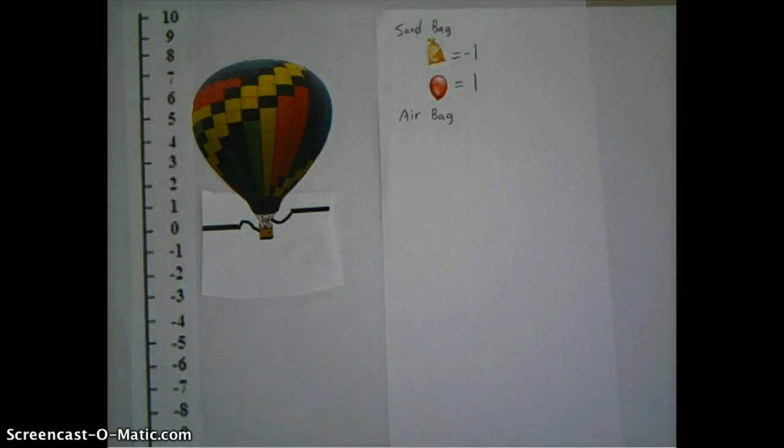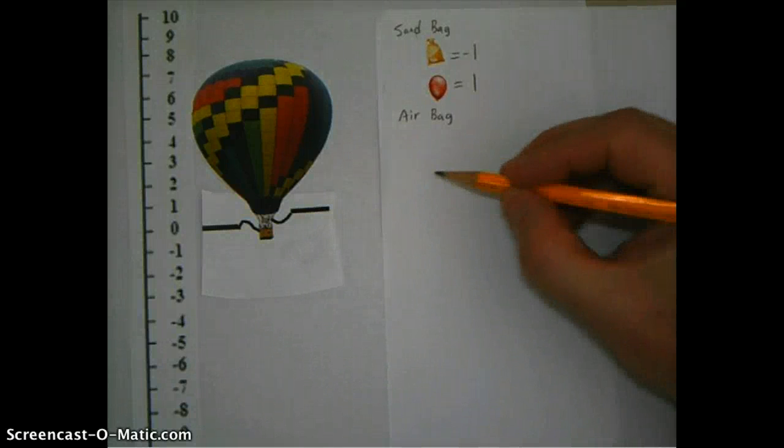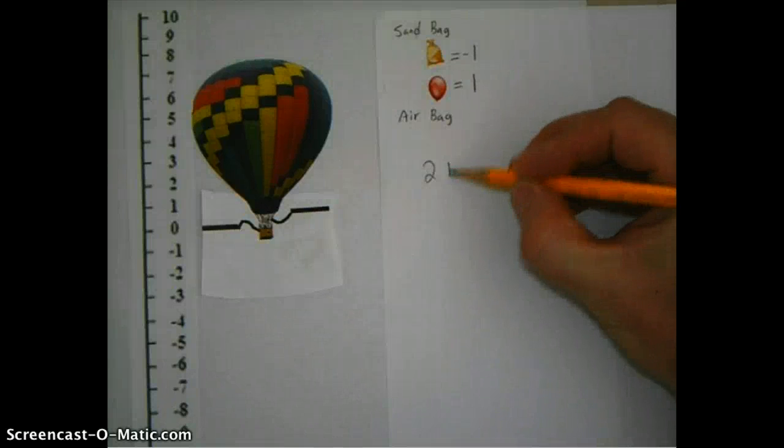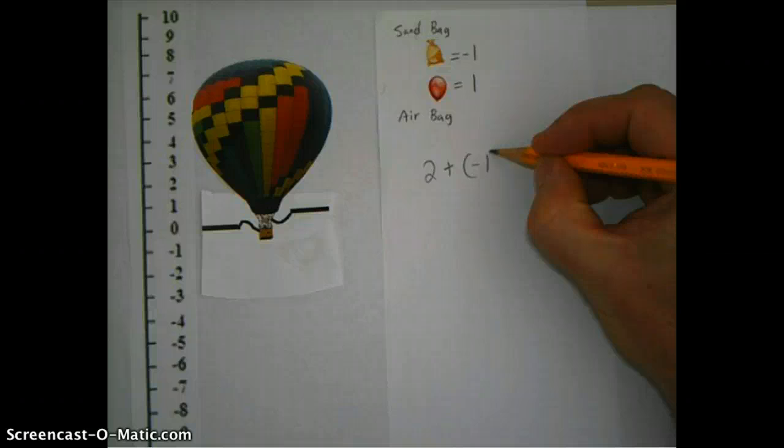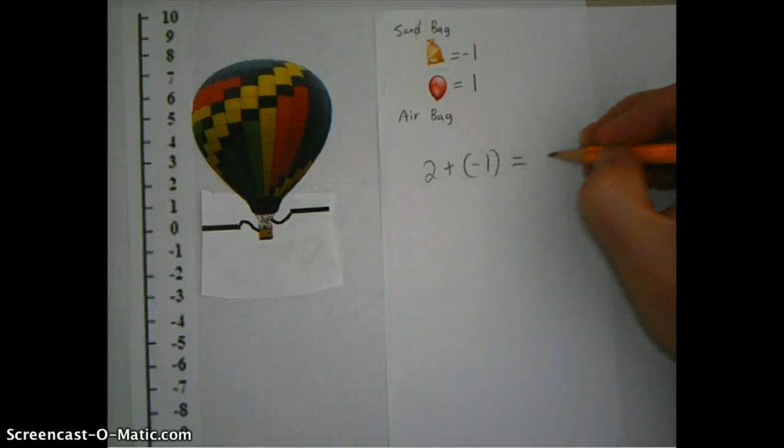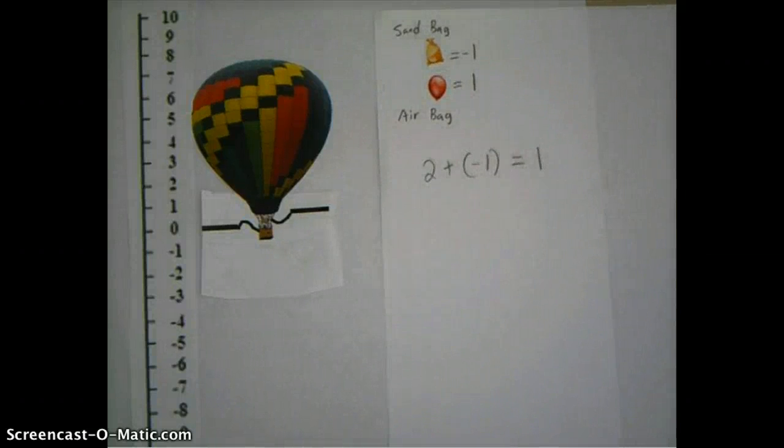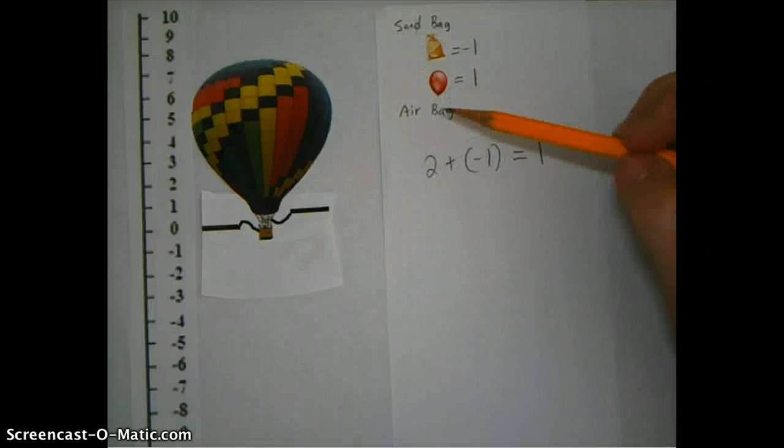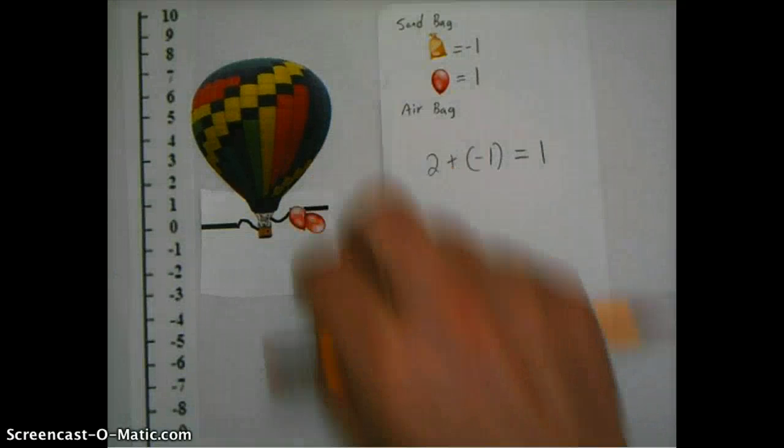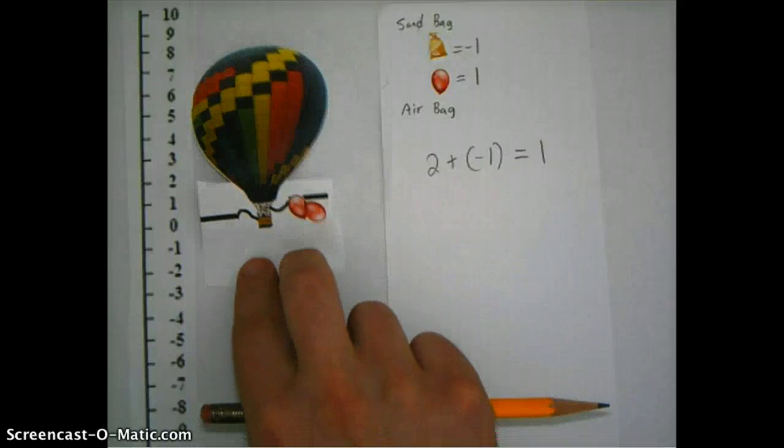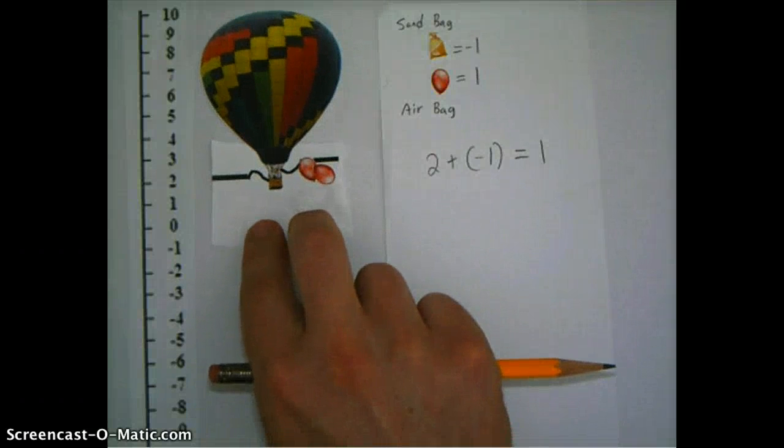So we're going to try use an example of a problem here to show how this works. Okay. If we have an altitude of two, and in order to get there, I need to put in a couple of airbags into here. So I'm going to add a couple of airbags on here. When that happens, it's going to float up to an altitude of two.